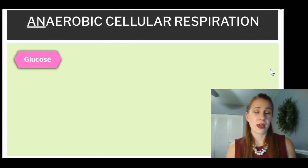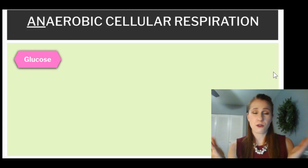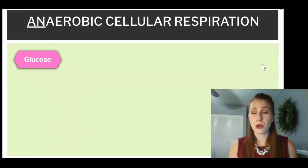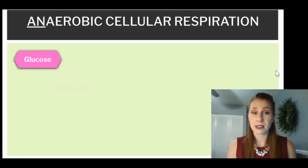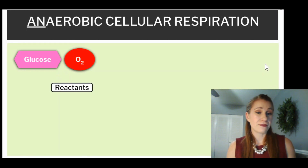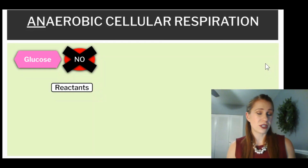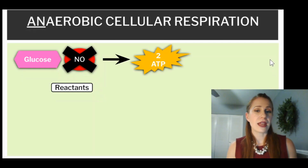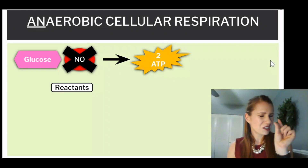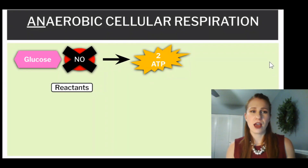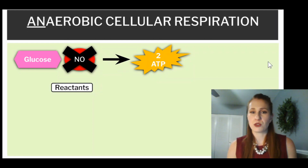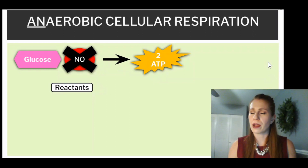Continuing on with anaerobic — we start our formula the same way. We have our glucose, C6H12O6, as our reactant. We don't have oxygen, so glucose is really our only reactant in anaerobic respiration. That is used to make two ATP — just a small amount. Remember, aerobic respiration makes between 36 and 38 ATP, so significantly more with oxygen.